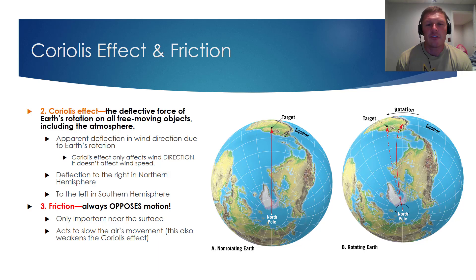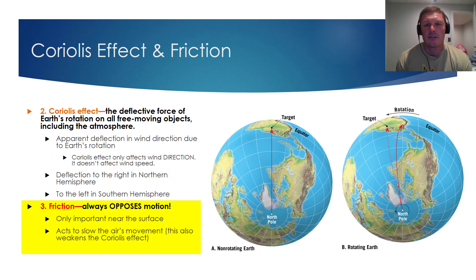The third and final factor that affects wind is friction, which always opposes motion and acts to slow down the movement of air. Importantly, if friction slows winds down, it also weakens the Coriolis effect, because faster-moving air experiences more deflection due to the Coriolis effect than slower-moving air. So friction both reduces wind speed and diminishes the Coriolis effect.